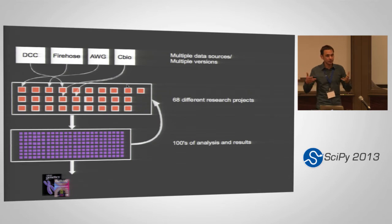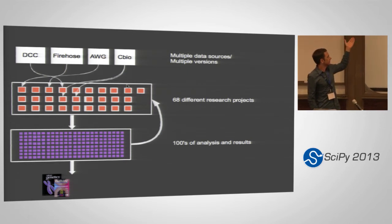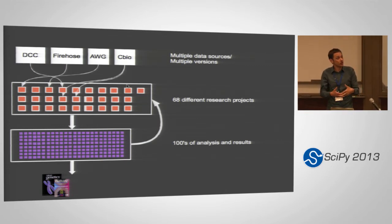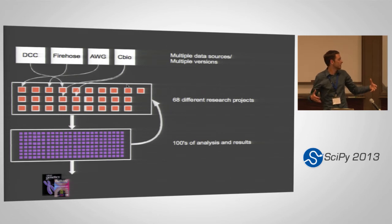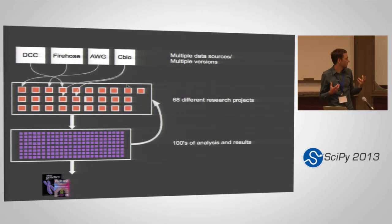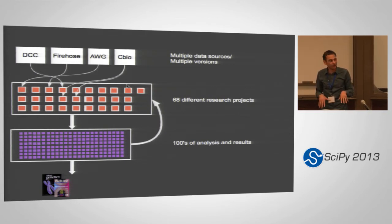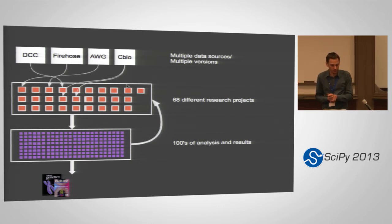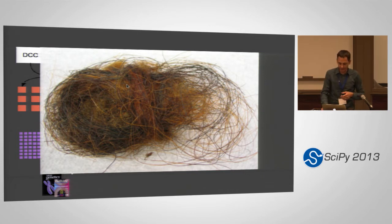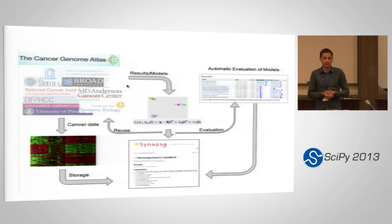When you have something this complicated, you have an issue coordinating all the different pieces. Raw data comes in from multiple locations: the data coordinating center, the Broad Firehose, individual working groups. All this data needs to be collated in one location, and it's constantly being updated so you have to keep track of versions and freezes of collections of files. Individual researchers pull data out for projects, generate output — but that output goes right back into the analysis. There are dependencies where the output of one group's algorithm becomes the input to a second algorithm. It becomes a hairball of dependencies, and you need a way to track that. That's why pan-cancer approached us to use Synapse.